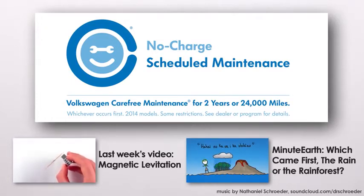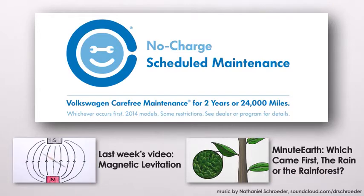Time slows down when you're moving, so driving 24,000 miles will keep your car 5 nanoseconds younger.